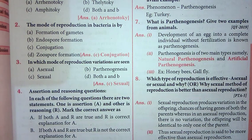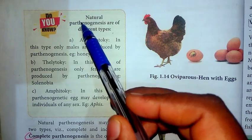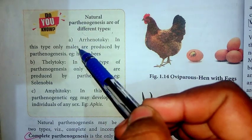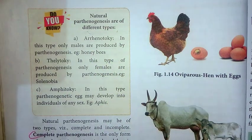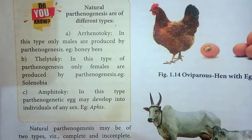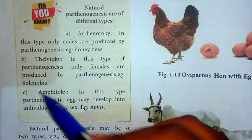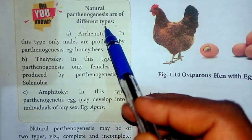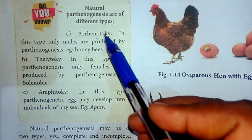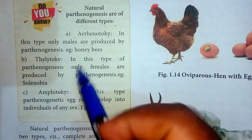We are now moving to Part C. For the first question — define the different types of parthenogenesis — natural parthenogenesis is of different types: arrhenotoky, thelytoky, and amphitoky.